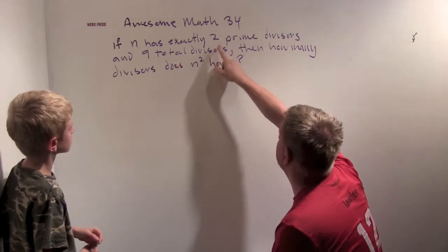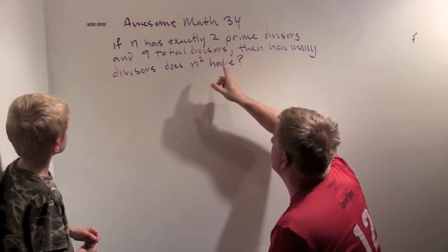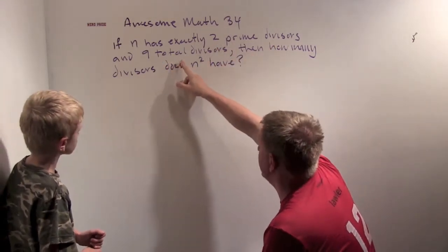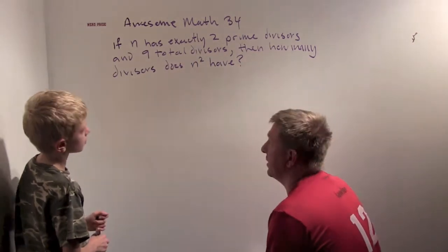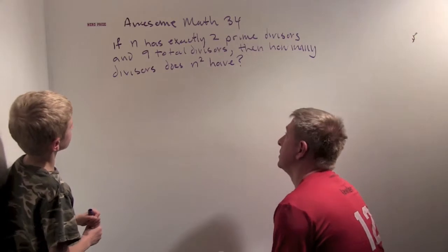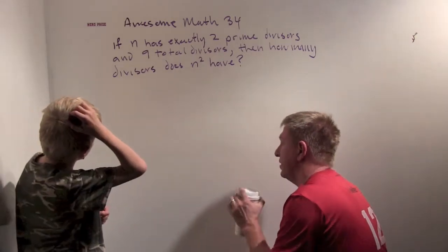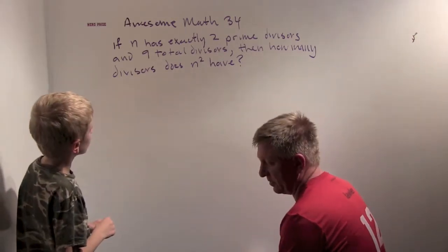if n, if our number has exactly two prime divisors and nine total divisors, then how many divisors does n squared have? Whoa. Alright, how do you even want to start thinking about this problem?